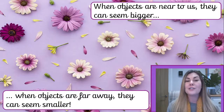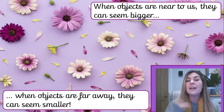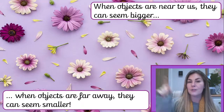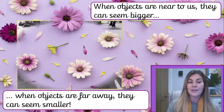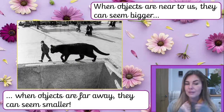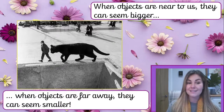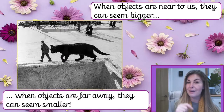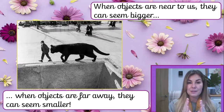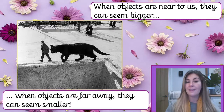Now I'm going to show you some really funny pictures that show near and far, and I would like you to tell me who is standing close to the camera and who is far away. Our first one is a man and a giant cat — no, that cat's not really giant. Who is standing near to the camera? The cat. And who is standing far away? The man. If they were to stand next to each other, the cat would be smaller than the man.